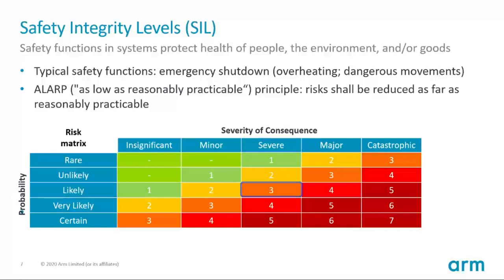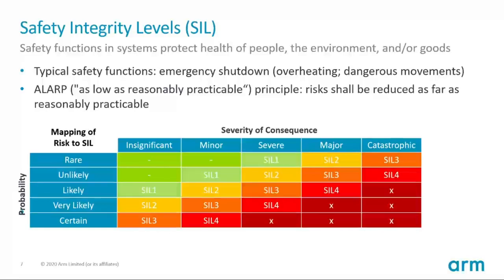Modifications to the glass or sealing of the window may further reduce the risk so that you might be able to qualify this as unlikely. This does not seem to be overly intuitive, but there is a statistical background. Each of these levels — probability or severity — is roughly a factor of 10 apart. Once you have analyzed the potential risk of your system, you can map the results to the SIL level of the related standard. The SIL maps the acceptable risk effectively to the development process.